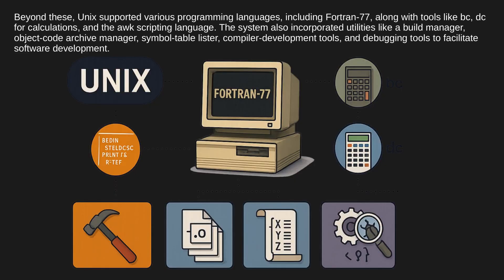Beyond these, Unix supported various programming languages including Fortran 77, along with tools like bc and dc for calculations and the AWK scripting language. The system also incorporated utilities such as a build manager, object code archive manager, symbol table lister, compiler development tools, and debugging tools to facilitate software development.